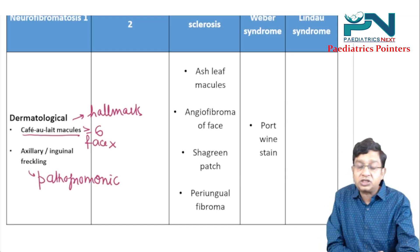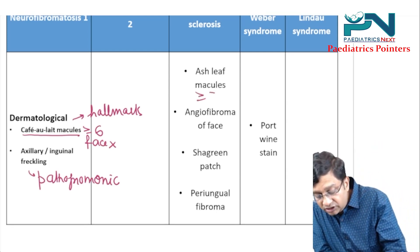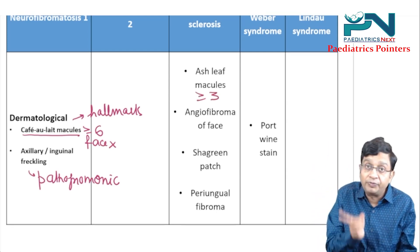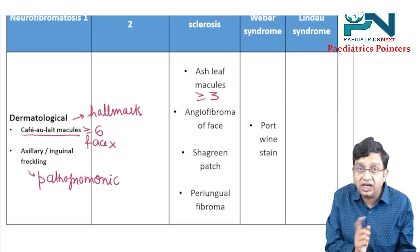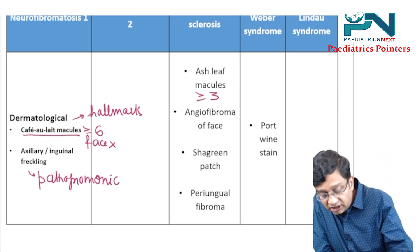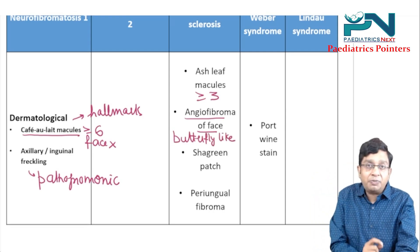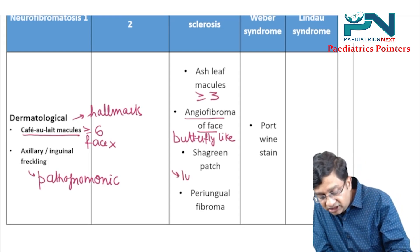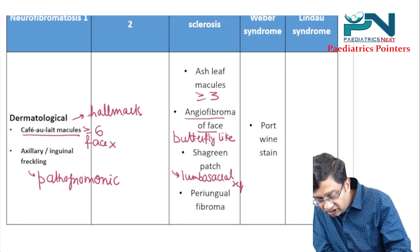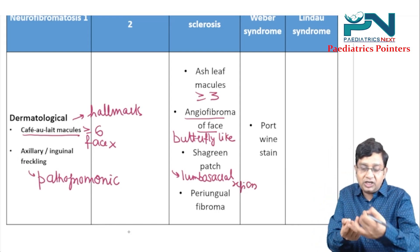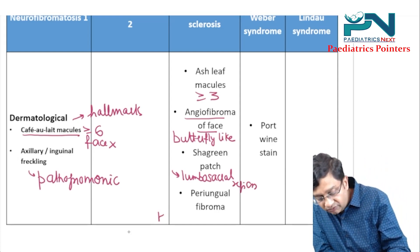In tuberous sclerosis, you get ash leaf macules, which should be three or more — café-au-lait macules were six, ash leaf macules are three. There is angiofibroma of the face in a butterfly-like distribution. A shagreen patch with orange-peel-like consistency is mainly seen in the lumbosacral region. Periungual fibromas, also called Koenen's tumor, are also seen.